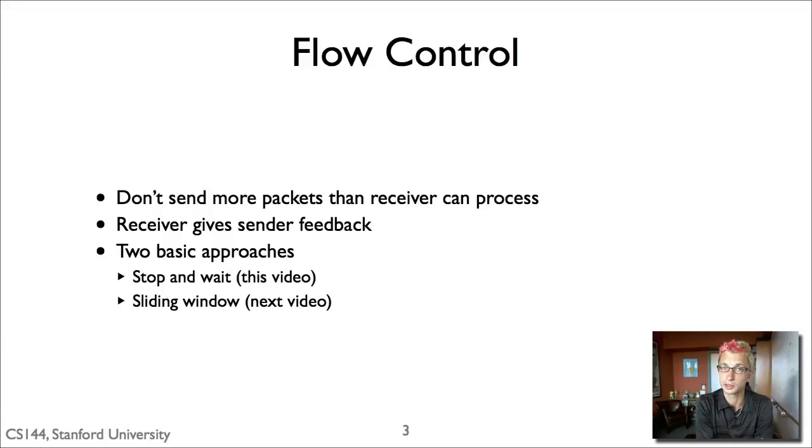And so the basic approach flow control takes is to make it so that the sender doesn't send packets faster than the receiver can process them. The way this usually works is the receiver gives the sender some kind of feedback, whether it's implicit or explicit, whether to slow down or speed up or to set a rate.